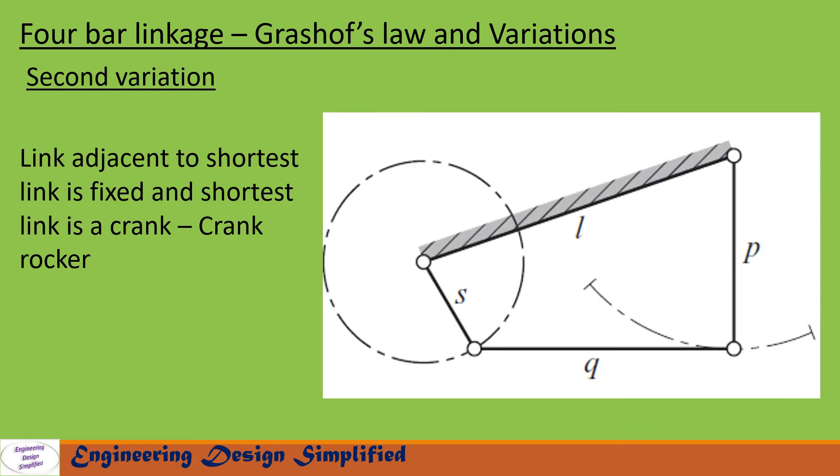The second variation is similar to the first variation. Here also the link adjacent to the shortest link is fixed and the shortest link is the crank. So in the previous slide we fixed Q but here we are fixing L. In this case also we get a crank rocker mechanism where the shortest link makes 360 degree rotation and its opposite link P will not make 360 degree rotation.